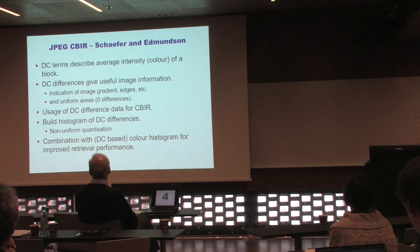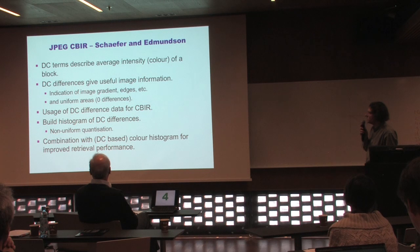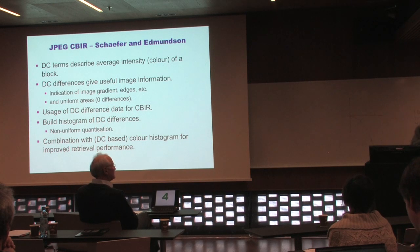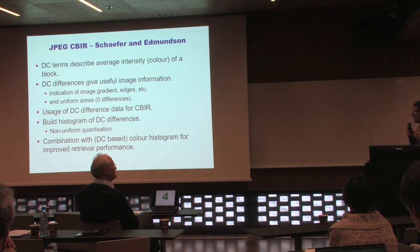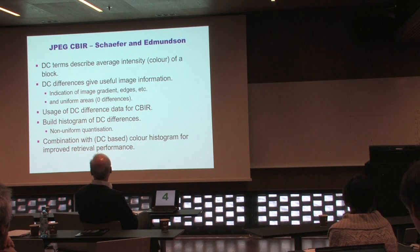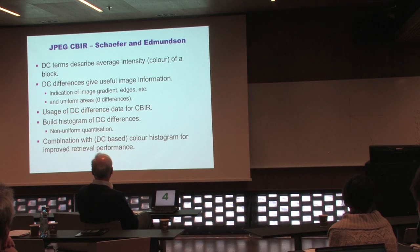More recently, we've done further work looking only at the DC terms. Each DC term defines the average color or intensity of an 8×8 block. In JPEG they are differentially coded — the difference from one DC term to the next is stored — and this difference data is visually meaningful: it provides information about image gradients and uniform areas (zero differences indicate a large uniform region). We use this DC difference data directly to build histograms, which can be combined with color histograms to improve retrieval performance.